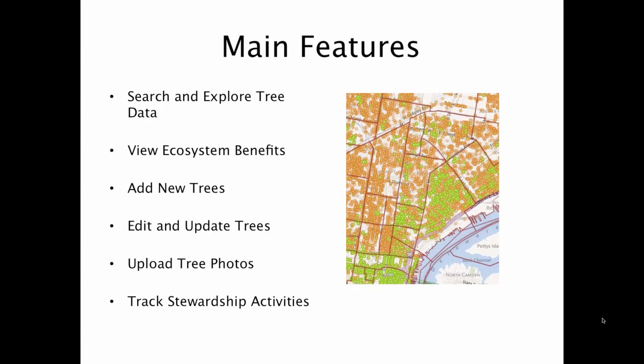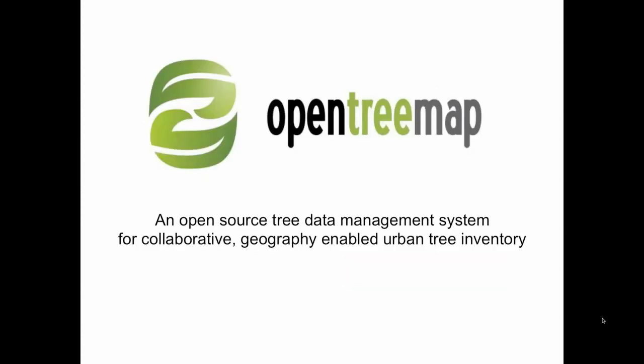So what is OpenTreeMap? At its core, OpenTreeMap is an open source tree data management system for collaborative, geography-enabled urban tree inventory. That's a lot of words to basically mean that we want to take our tree data out of the databases, out of the filing cabinets, and put it online in a web environment where people can engage with it and where the public can become an interactive part of our urban forestry initiative.